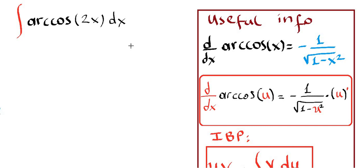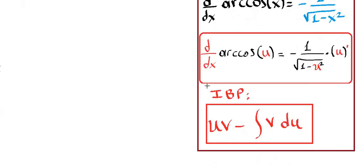Hello everyone. This time we're going to integrate cosine of 2x. Our plan is to use integration by parts: u times v minus the integral of v times du.